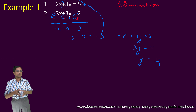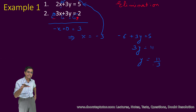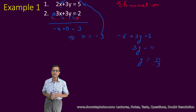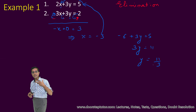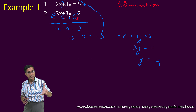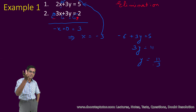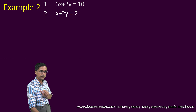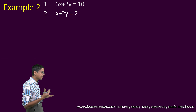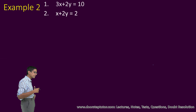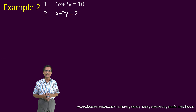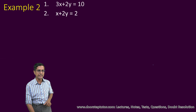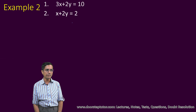So this is the elimination method, and this is our preferred method for solving simultaneous equations — be that two variables, or three equations in three variables. If we have linear equations, this is the method we are going to prefer, unless under special circumstances we might prefer other methods. This is our default method.